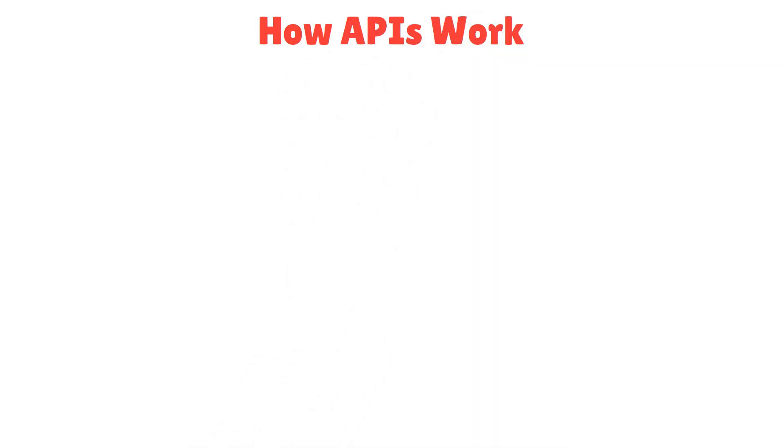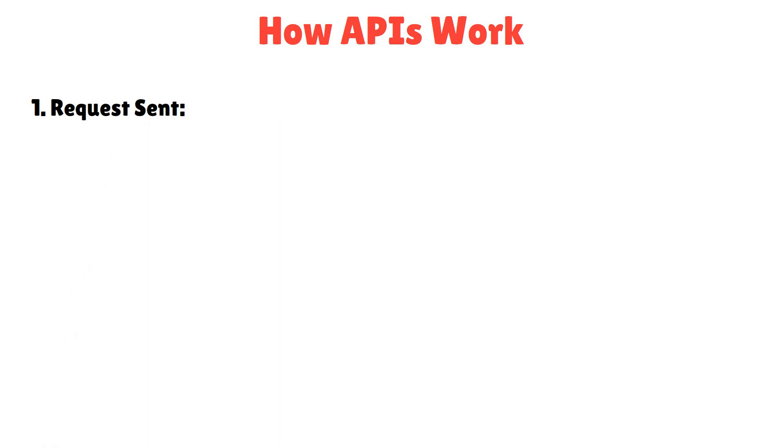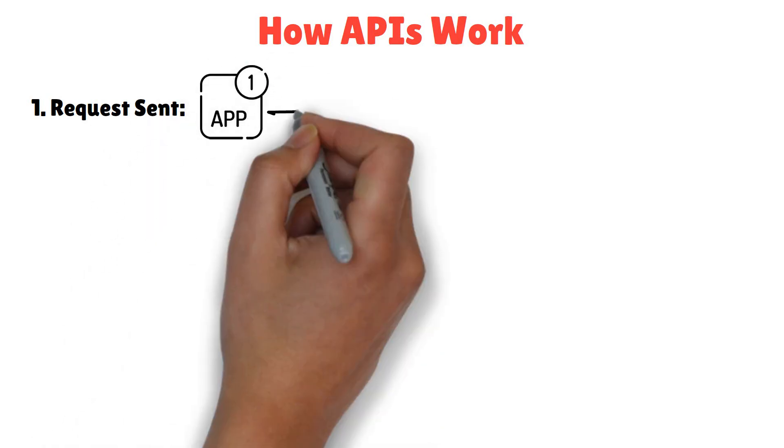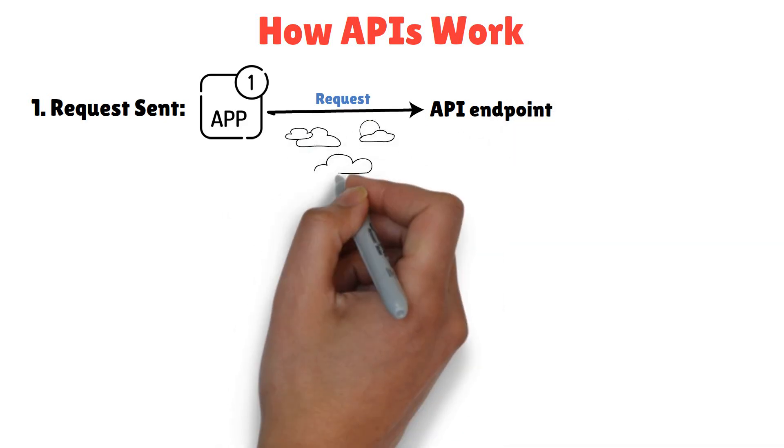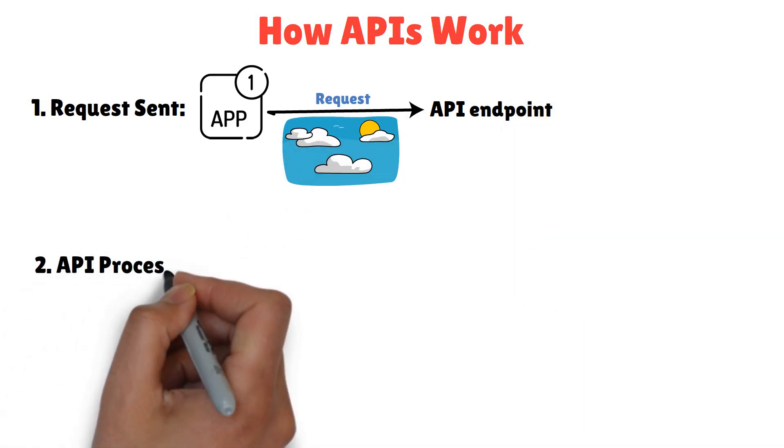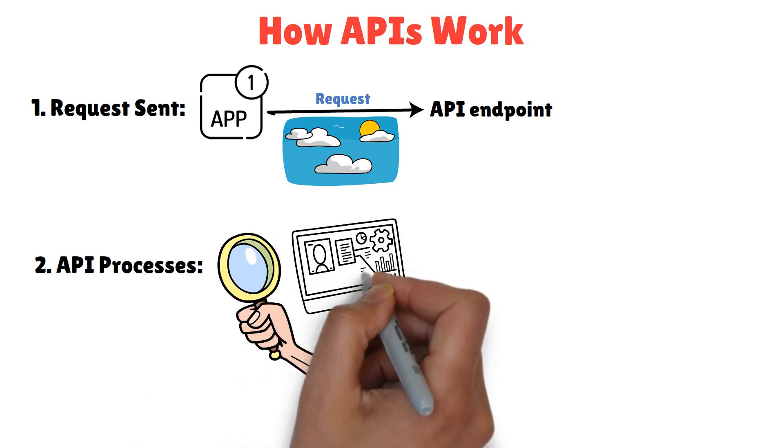Let's break it down into simple steps. 1. Request sent. Your app sends a request to the API endpoint. An example, what's the weather today? 2. API processes. The API receives the request, checks the backend, and gathers the needed data.